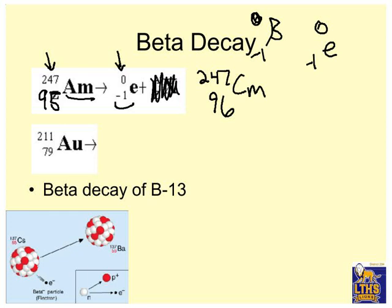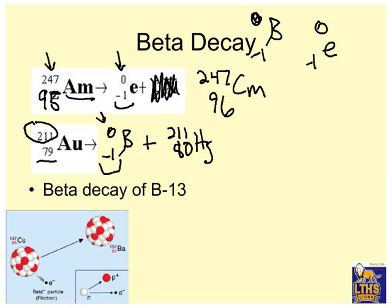All right, gold. I've got a beta particle, 0, negative 1, beta. Plus, now notice, if it's beta, that's why this is beta decay. So this is going to be the same mass, 211. And negative 1 with something will equal 79. That something will be 80. Now, this is the saddest reaction, because what happens is you turn gold into mercury. I wanted gold, and it turned into mercury. So make sure your gold's not radioactive, or you'll be sad.